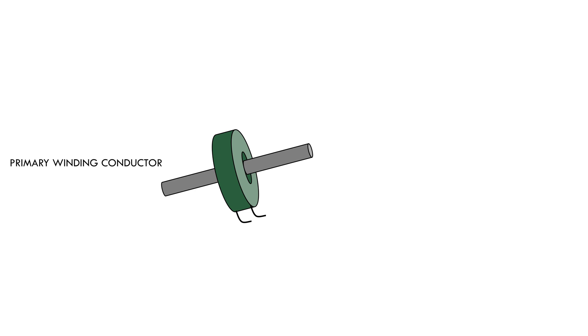Through its center, a conductor or bus has been inserted, which acts as primary winding. Round CT is an assembly of core and winding, that is secondary winding.